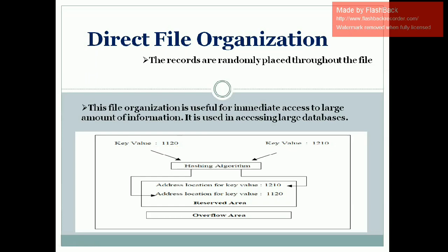Suppose you use key 1120 — the hash function processes it and you can store the data directly at that location. Whenever new data arrives, the hash algorithm takes a decision based on the token. The token value determines where the data will be stored. There is no fixed order — you can store at any location — but token-wise, data will be stored in the reserved area only.